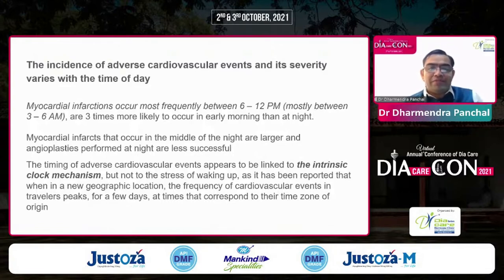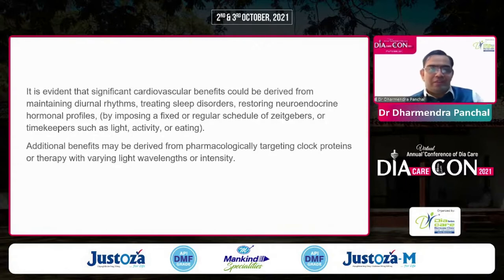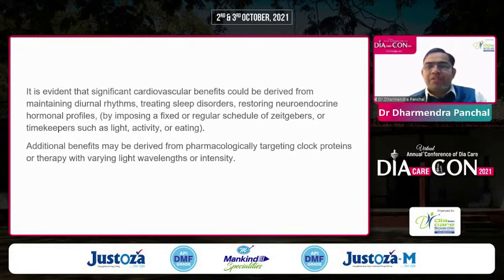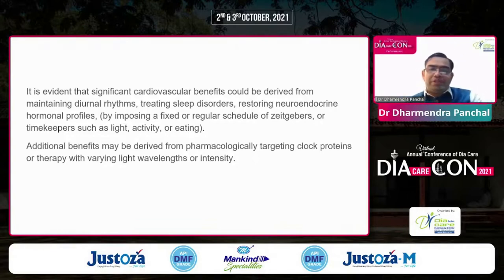It is reported that when in a new geographical location, the frequency of cardiovascular events in a traveler peaks for a few days at a time corresponding to their time zone of origin, not their current location. Significant cardiovascular benefit could be derived from maintaining diurnal rhythm, treating sleep disorders, and restoring neuroendocrine hormone profiles — by regularizing schedules of timekeepers like light, activity, and eating. We may also derive benefit by targeting clock proteins through therapies.